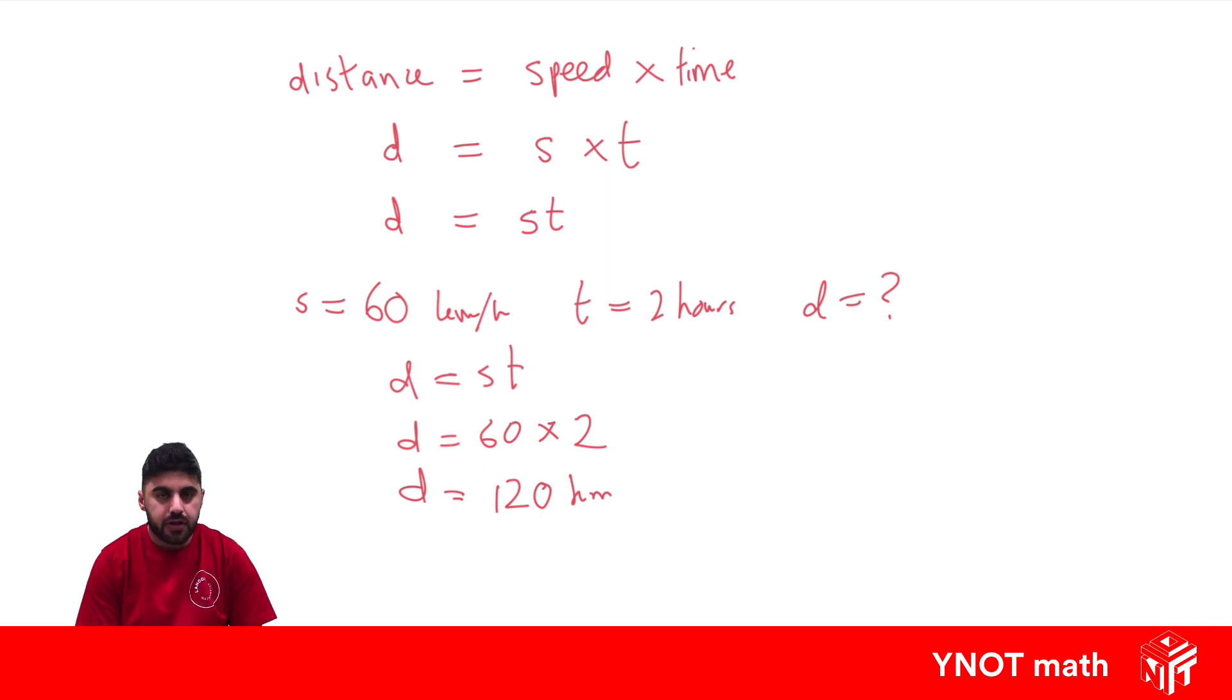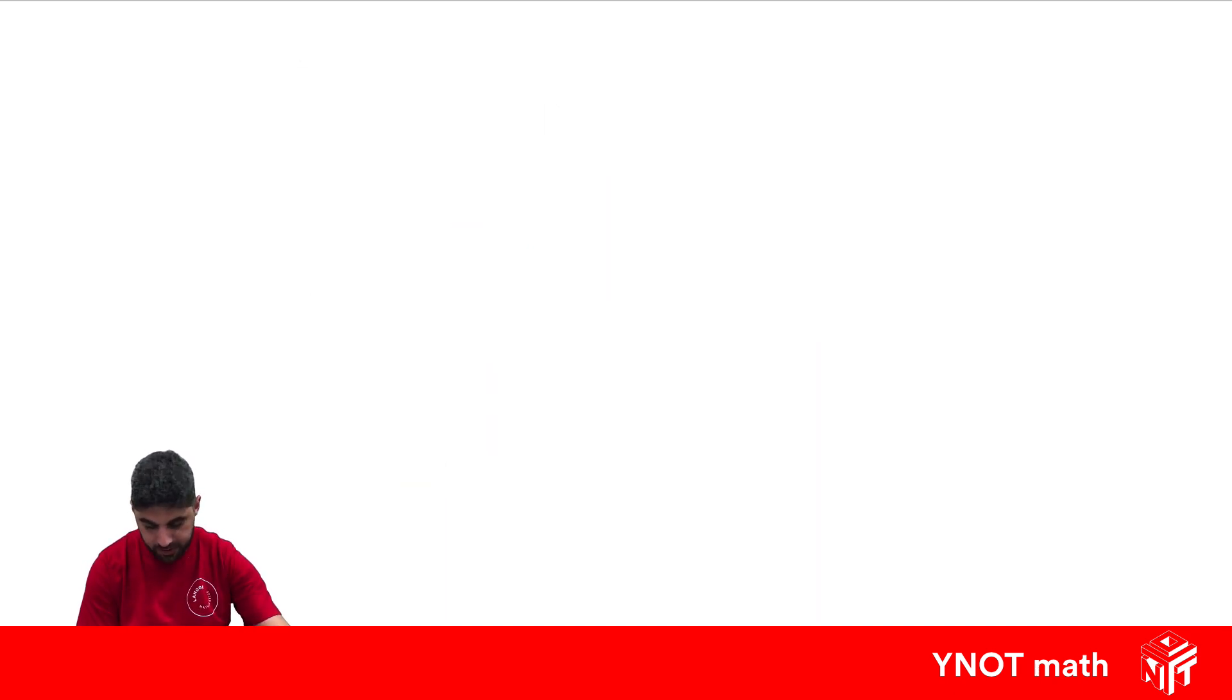It involves putting in the values of the pronumerals that you know to work out the ones that you don't know. Let's have a look at another example.